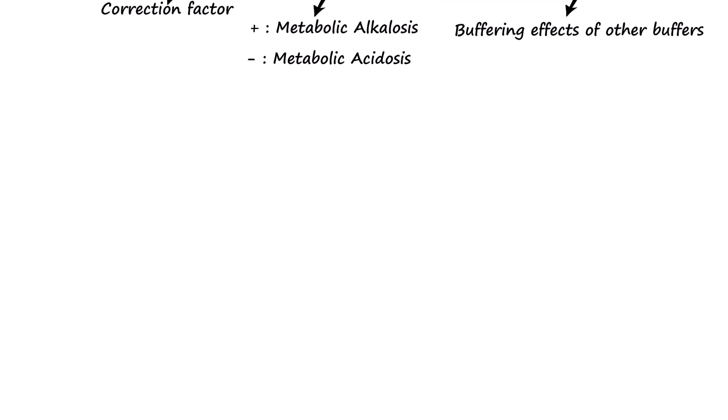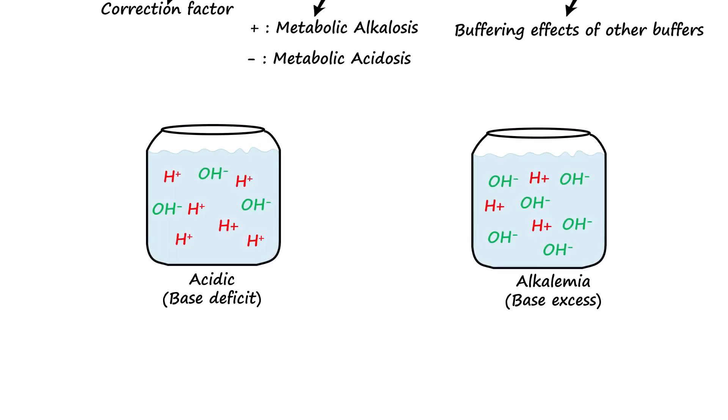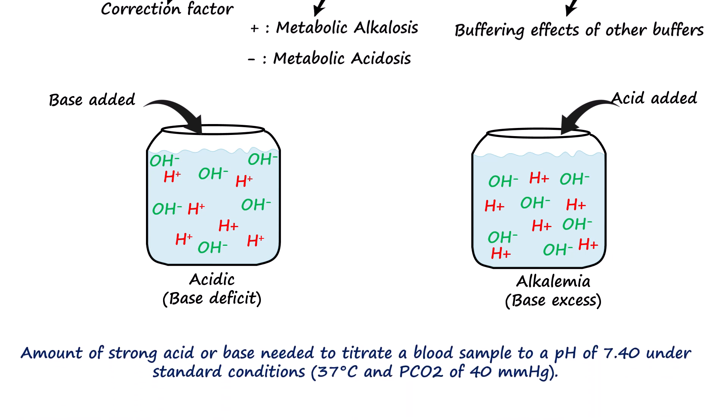Prior to this formula, experiments were used to measure the amount of acid or base added to normalize the pH to 7.4. If acid was added, it was called base excess, and if base had to be added, it was called base deficit. This is the reason why base excess or deficit is defined as the amount of strong acid or base needed to titrate a blood sample to a pH of 7.4 under standard conditions of 37°C temperature and PaCO2 of 40 mmHg.